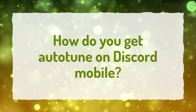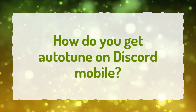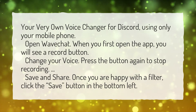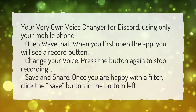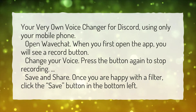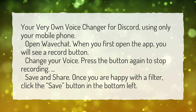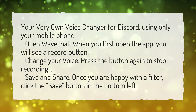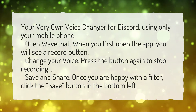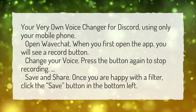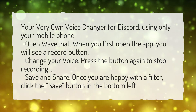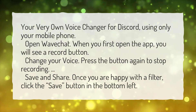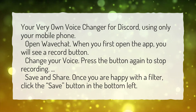How do you get Auto-Tune on Discord Mobile? Your very own voice changer for Discord, using only your mobile phone. Step 1: Open WaveChat. When you first open the app, you will see a record button. Step 2: Change your voice. Press the button again to stop recording. Step 3: Save and share. Once you are happy with a filter, click the Save button in the bottom left.